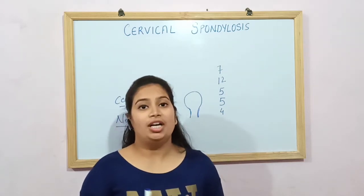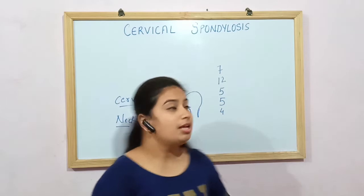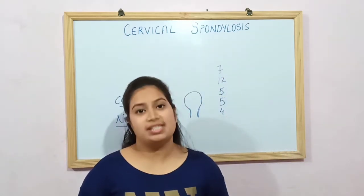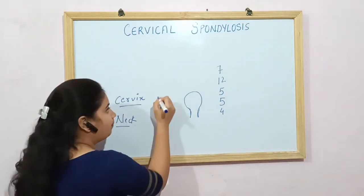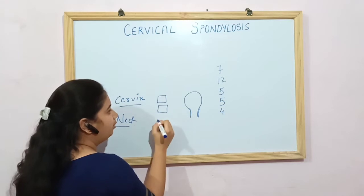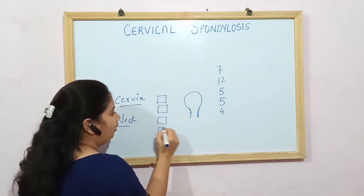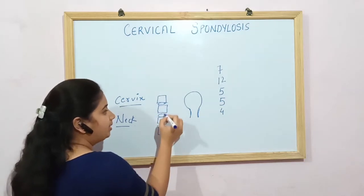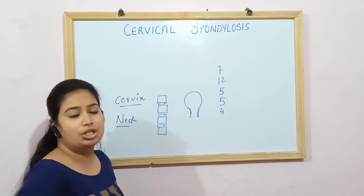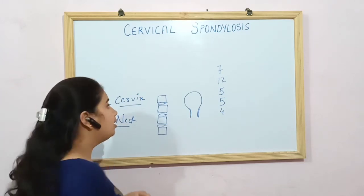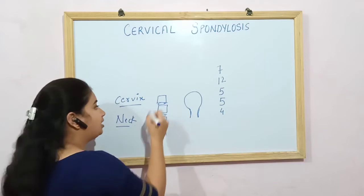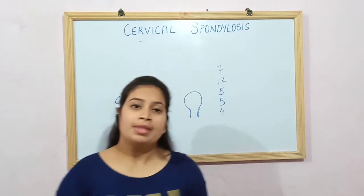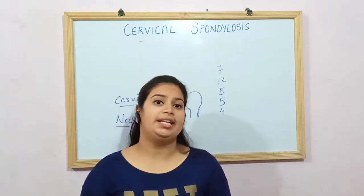Now what does spondylosis mean? Spondylosis is a painful condition in which your disc gets degenerated. When the disc gets degenerated due to age-related conditions and other causes, this is called spondylosis. If the disc gets degenerated in the cervical area, we call it cervical spondylosis.